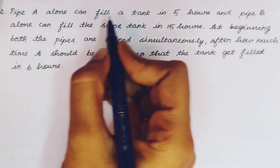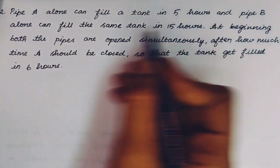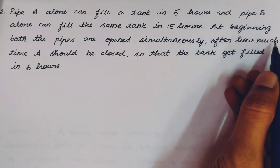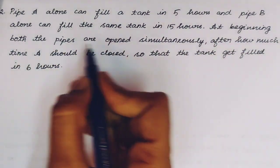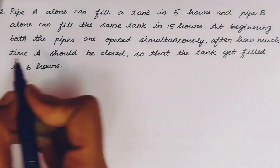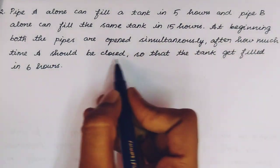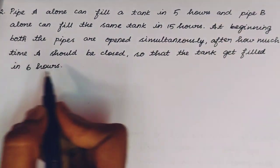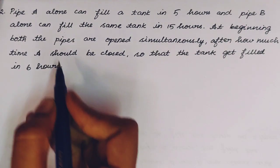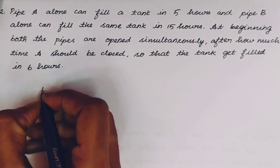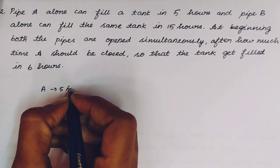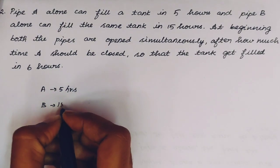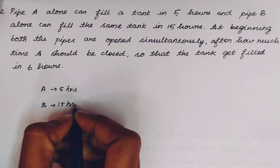Pipe A alone can fill the tank in 5 hours and Pipe B alone can fill the same tank in 15 hours. At the beginning both pipes are open simultaneously. After how much time should A be closed so that the tank gets filled in 6 hours? So it's the same type of question. A takes 5 hours and Pipe B takes 15 hours.